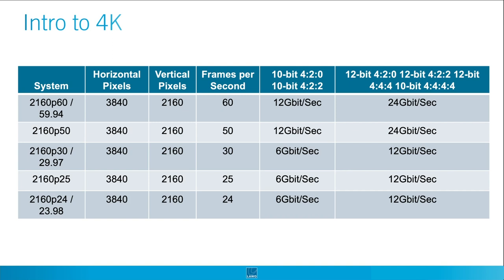On the other hand, while a color depth of 8 bits was sufficient for a satisfying experience in SD and even in HD formats, we would agree that at least 10 bits of depth are necessary in 4K. And even that high dynamic range pictures in 12-bit should be the natural evolution for those formats.